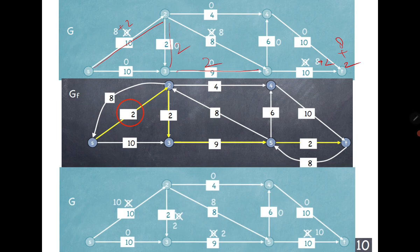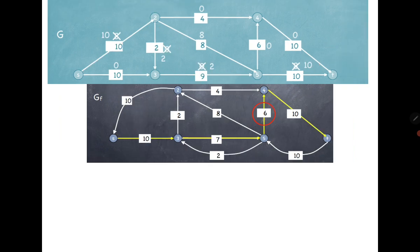We compute the residual graph again. This residual graph shows the flow is now 10. There is still an S-T path visible, with minimum capacity 6, meaning in the next step we will get a flow of 10 plus 6, which is 16.